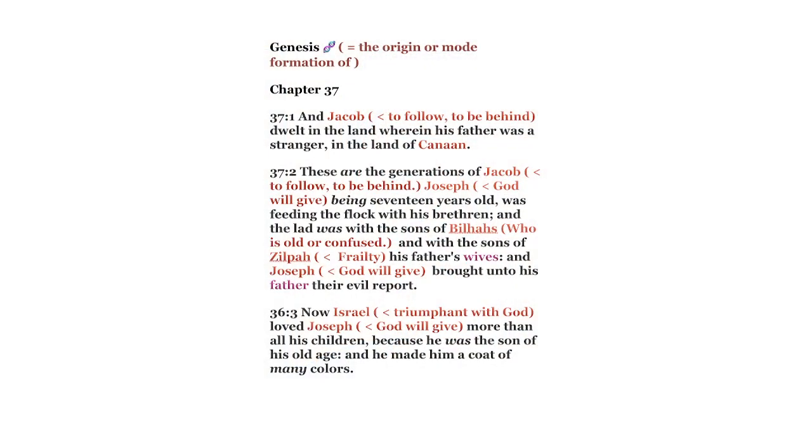Good morning, everyone. I am doing Chapter 37 of Genesis. Let's get started. Chapter 37 is about Jacob and his coat of many colors.